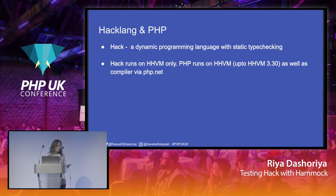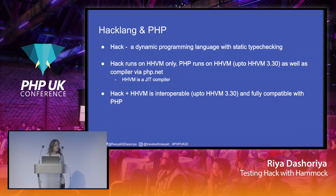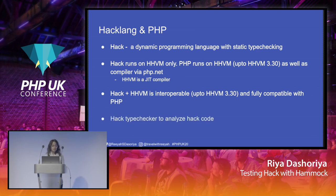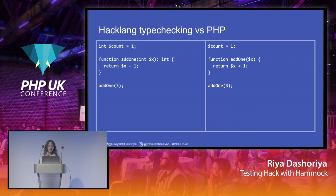PHP can run on Hack for up to HHVM version 3.30; beyond that, PHP is not supported. However, PHP can run on any compiler via PHP.net. Hack and HHVM are interoperable up to HHVM 3.0 and fully compatible with PHP — any code written in PHP can be called into Hack, and any code written in Hack can be called into PHP. There is a Hack type checker to analyze Hack code while you're editing files, which helps prevent many runtime errors.